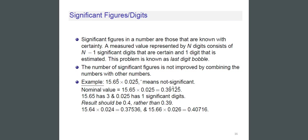Next topic: significant figures or digits. Significant figures in a number are those that are known with certainty. A measured value represented by n digits consists of n−1 significant digits that are certain and one digit that is estimated — this is known as the last digit bubble. For example, 15.65 × 0.025: 15.65 has 3 significant figures and 0.025 has one, so the nominal result 0.39125 should be rounded to 0.4.